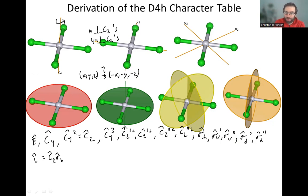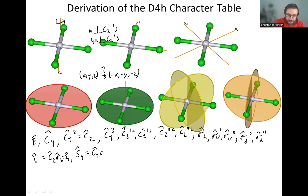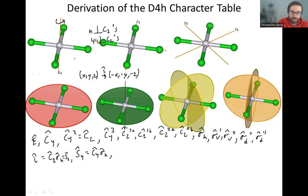We can also combine the sigma H with C4 to get S4 — that's the definition of an improper rotation, S4. So we have a C4 followed by sigma H — a 90 degree rotation followed by a flip through the horizontal mirror plane. Sigma H doesn't really do anything to a planar molecule, so the atom stays there. We also have an S4 which is C4 three times followed by sigma H.